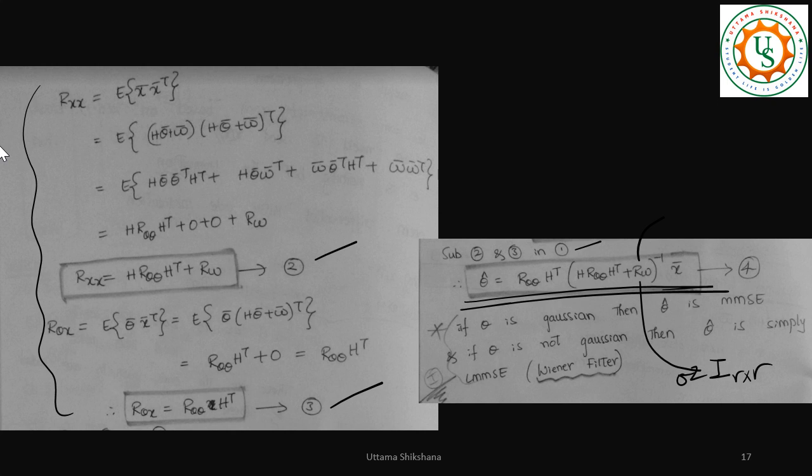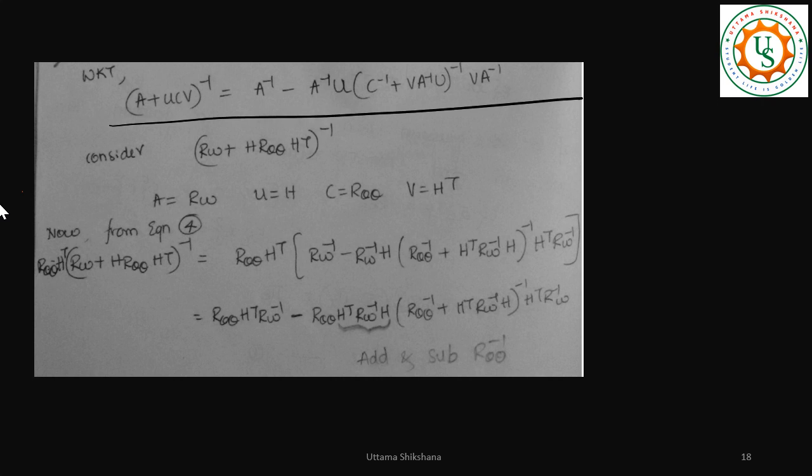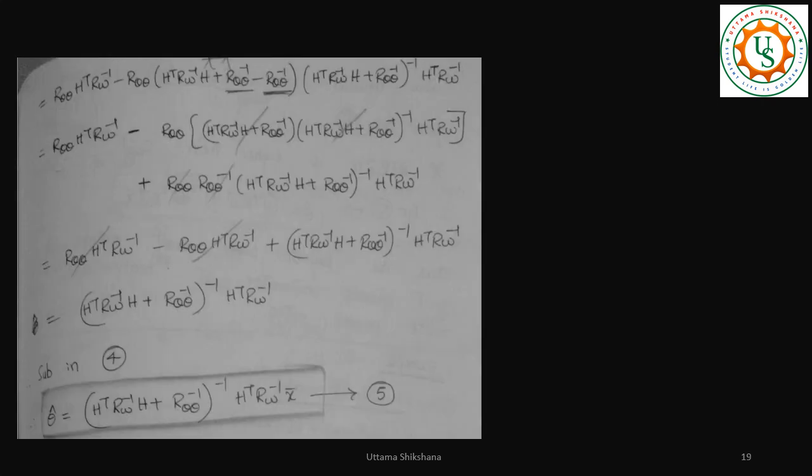Now, the thing is, this matrix inversion is again R cross R, which is very costly, where number of receiver antennas will be greater than transmit antennas. Again, on a similar lines using Woodbury's identity, we can derive the more optimal equation that is given by here. As you can see, this Rw have not taken it as identity. It includes the interference and this is the final equation. And if you see this matrix inversion, it is T cross T matrix inversion. Pretty much less time intensive.